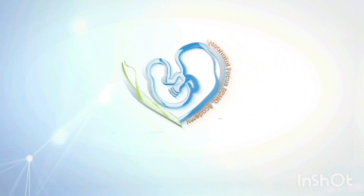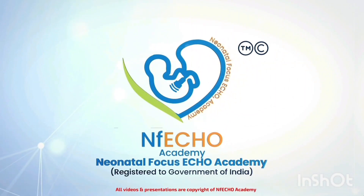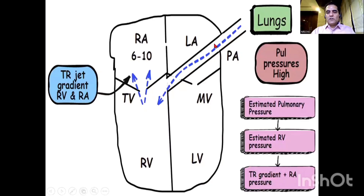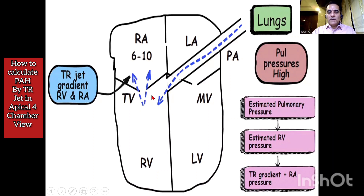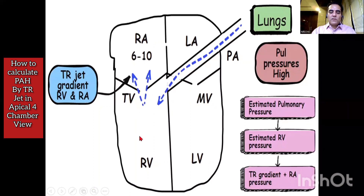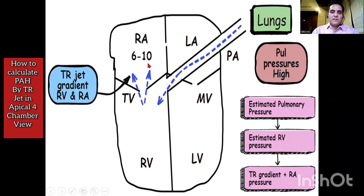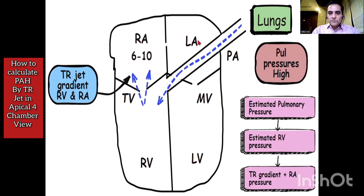Welcome to NEFCO, a solution for all kinds of neonatal ECOS and POCUS training. Today we will be talking about calculations of TRZ estimated right ventricular pressures. This is an apical four-chamber view graphic, and pulmonary pressures are depicted by RV pressures. RV pressures can be indirectly calculated in an apical four-chamber view, parasternal long axis, and parasternal short axis view. These right ventricular pulmonary pressures are estimated by TRZ.